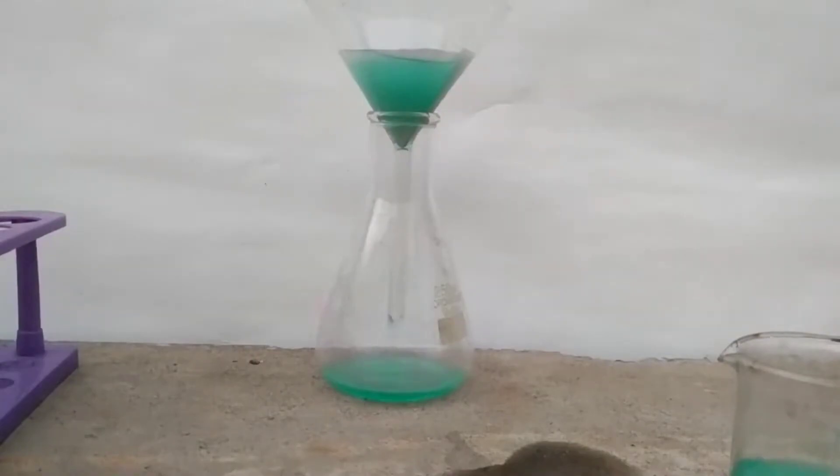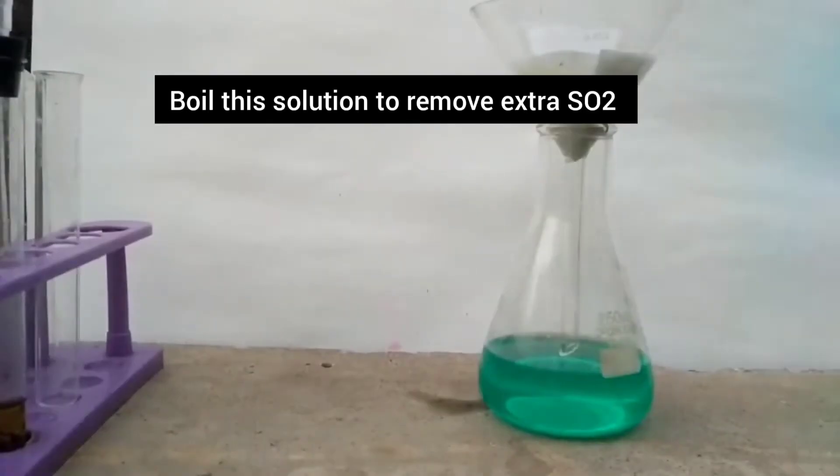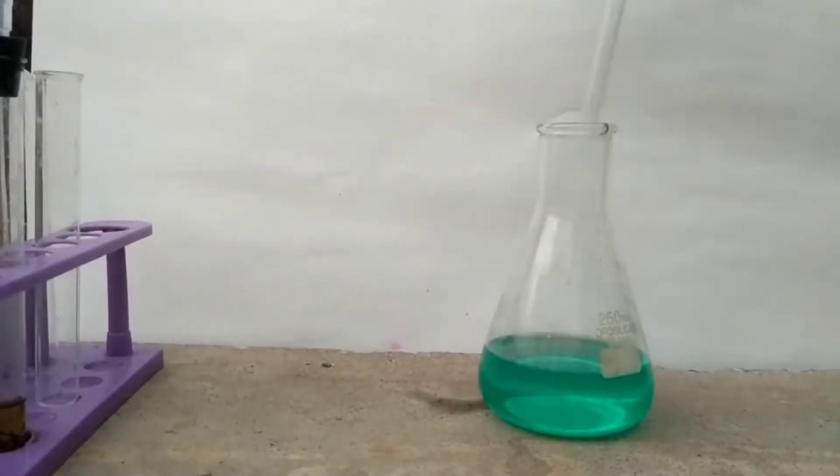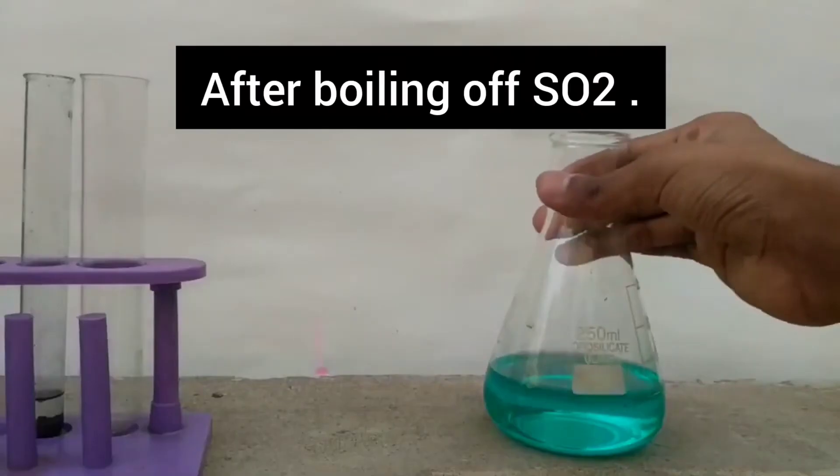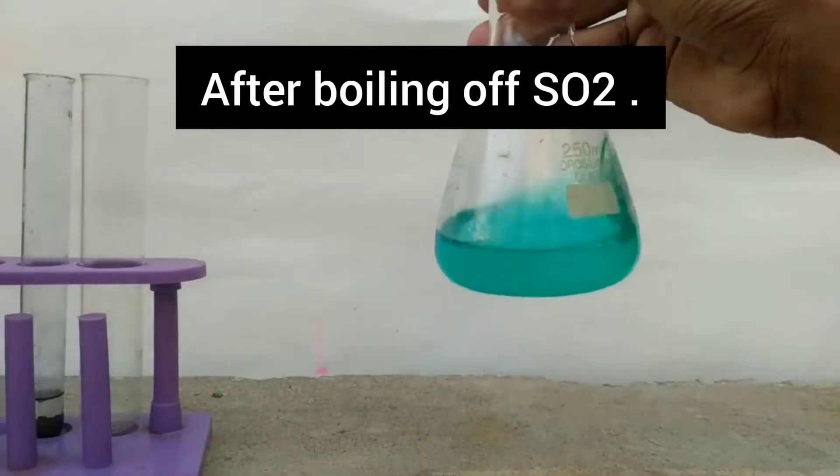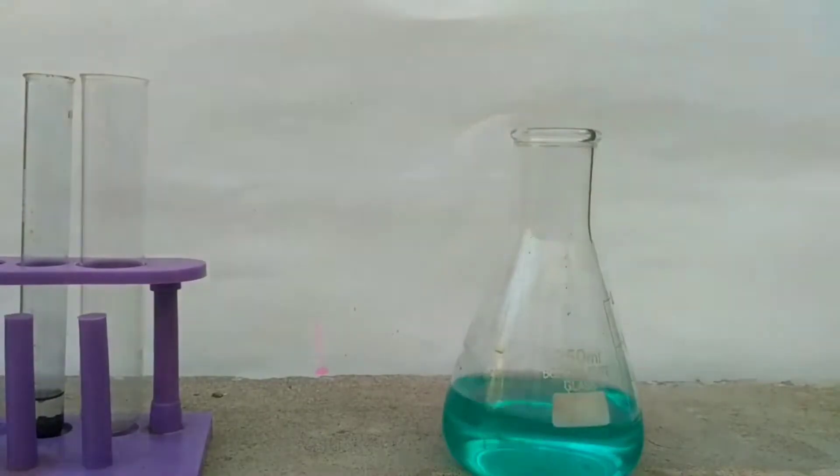Filtering takes some time. After we have filtered the solution, boil the solution to expel extra sulphur dioxide. After boiling, the solution attains a bluish tint.